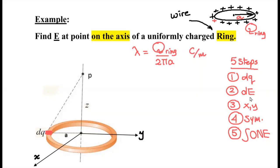So to find the electric field on the axis of the ring: the axis of the ring is a line that is perpendicular to the plane of the ring. I assume here that the ring is in the x-y plane, so the axis is in the z direction, and at height z I want to find what the electric field at this point will be.